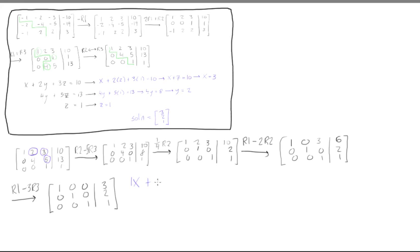One x plus zero y plus zero z is equal to three, and we have zero x plus one y plus zero z is equal to two, and we have zero x plus zero y plus one z is equal to one, and so if we cancel out all these zeros, we will get x is equal to three, y is equal to two, and z is equal to one.